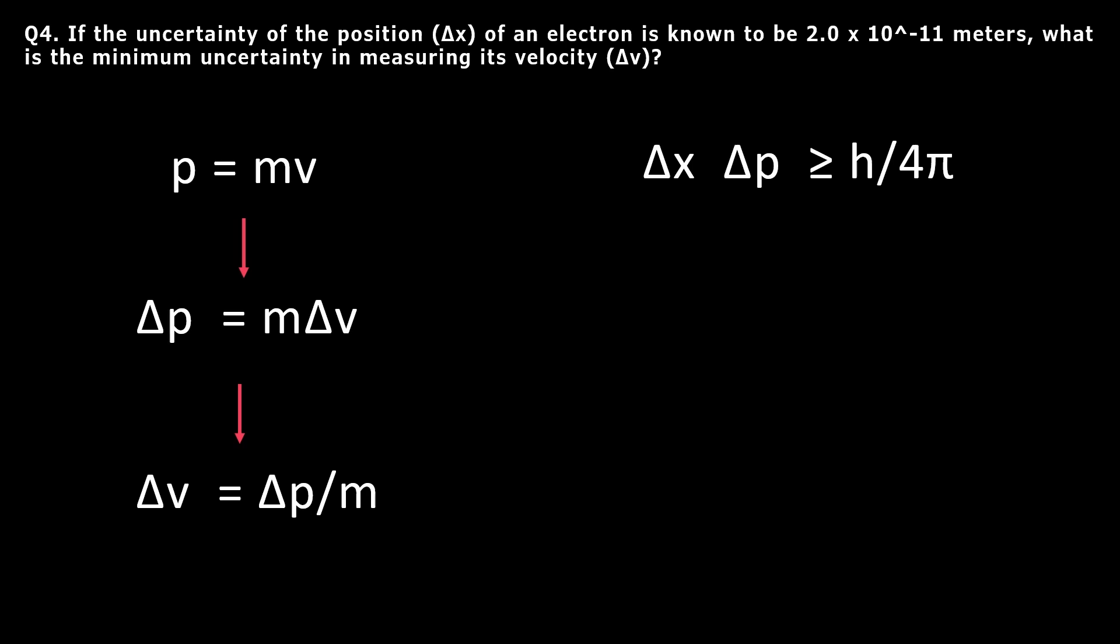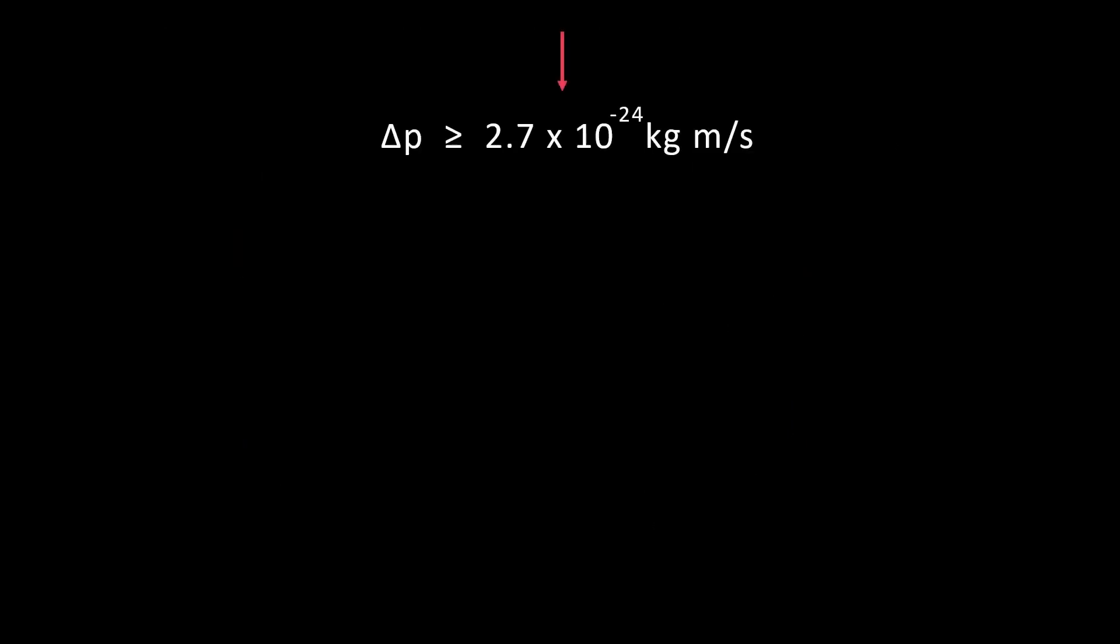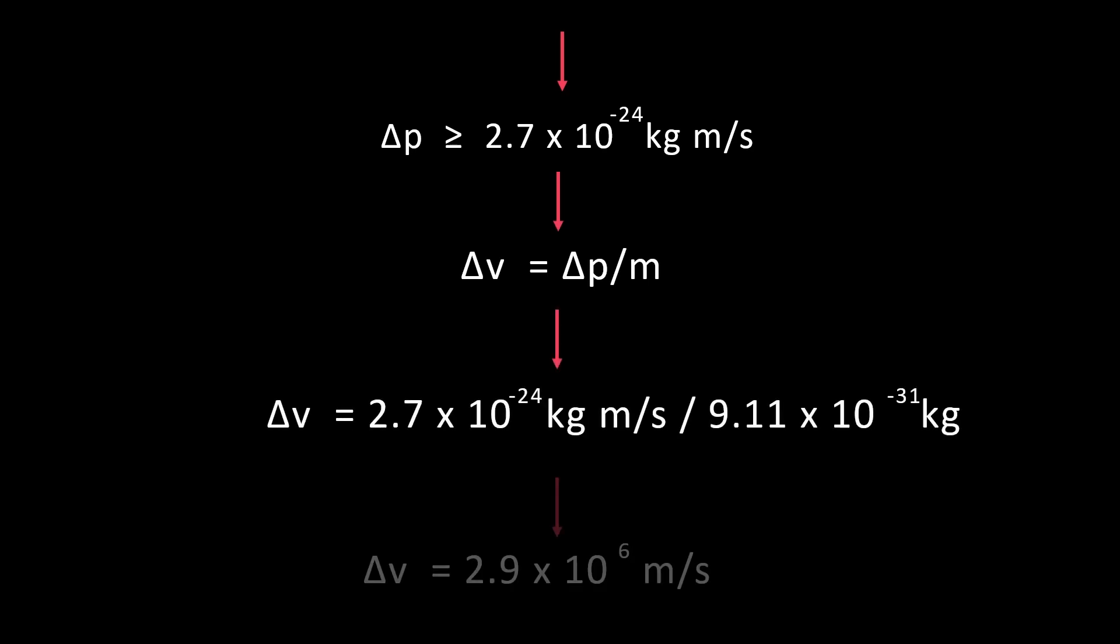...we can rearrange this to find Δp, which equates to 2.7 times 10 to the negative 24 kilograms meter per second. We then plug in the values for momentum and mass, and the answer is approximately 2.9 times 10 to the power of 6 meters per second.